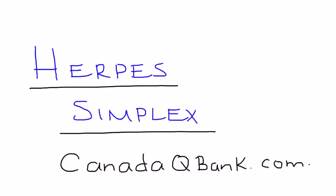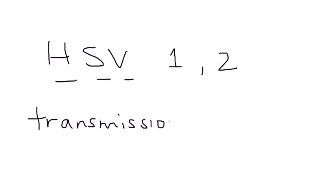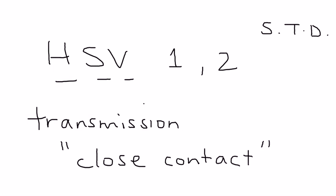Herpes simplex is caused by herpes simplex virus, and there are two types: herpes simplex virus 1 and herpes simplex virus 2. The transmission is technically a sexually transmitted disease, but children and babies can also get it during delivery. The mode of transmission is really called close contact with an infected person when the virus is actively shedding.